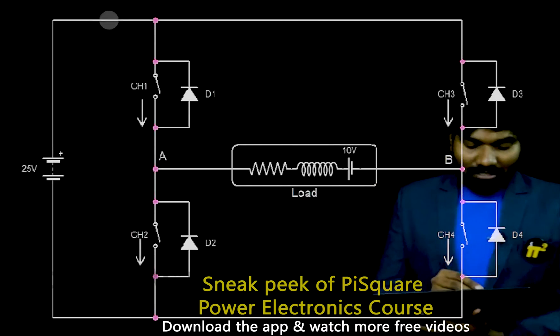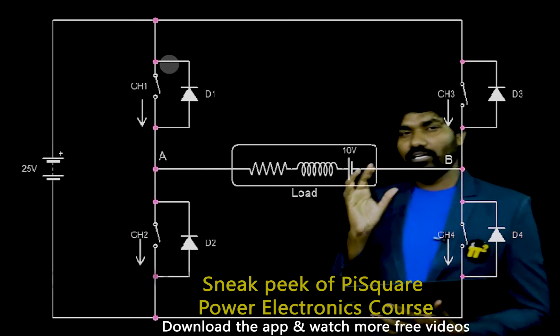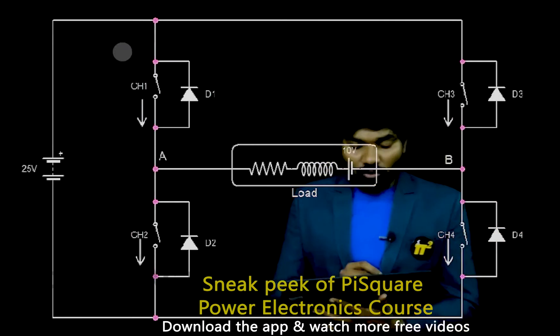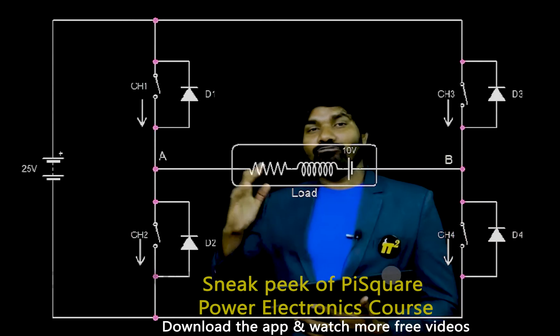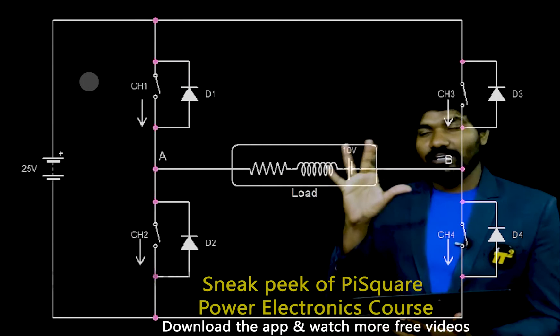This is the Type E chopper. The diagram you see is Type E chopper circuit configuration. Now the same configuration is true for inverter case also. In case of single phase inverter, you will see the same circuit configuration.